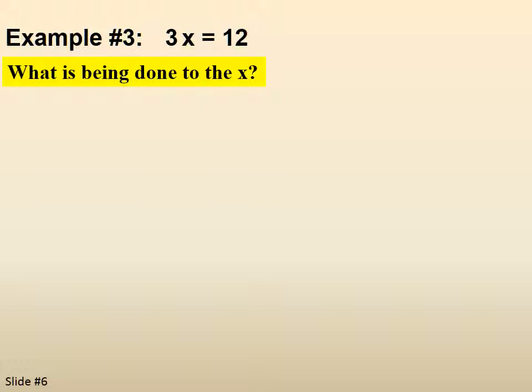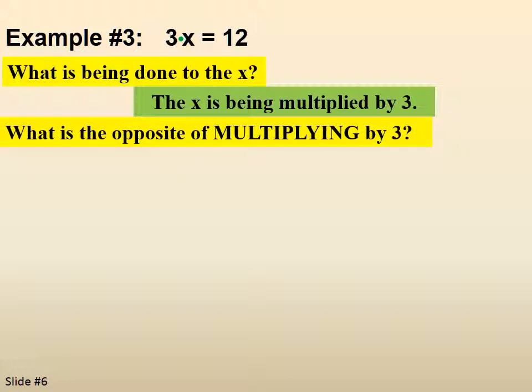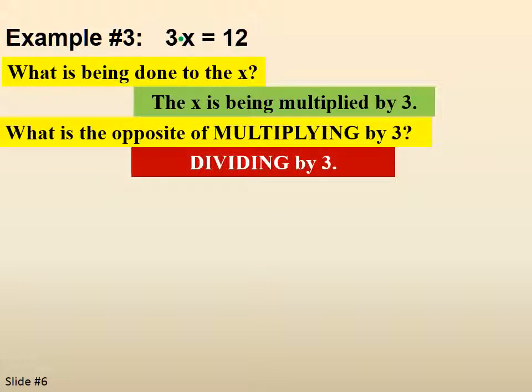3x equals 12. What is being done to the x? The x is being multiplied by 3. When numbers and letters are backed up together, or letters are backed up together, it means multiplication. There's an unwritten multiplication dot between the 3 and the x. So the opposite of multiplying by 3 is dividing by 3.